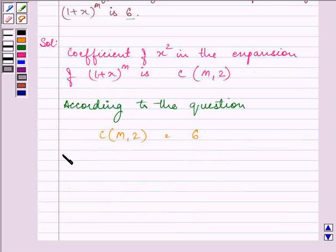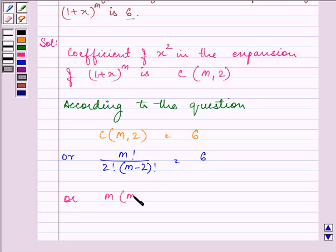So we have m factorial divided by 2 factorial times m minus 2 factorial equals 6. Further, m factorial can be written as m multiplied by m minus 1 multiplied by m minus 2 factorial, divided by 2 times 1 times m minus 2 factorial. That is equal to 6.